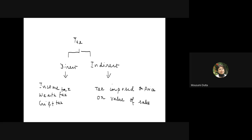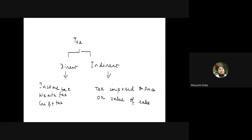Public debt is confirmed as a major source. PSUs selling products and services is another source. Printing currency is also a mechanism — only the government can do this; if any private organization does it, that is a malpractice. So the three most important sources of government revenue are taxation, public debt, and printing currency.